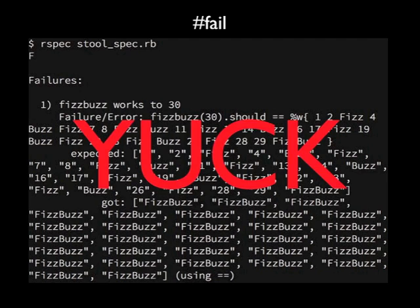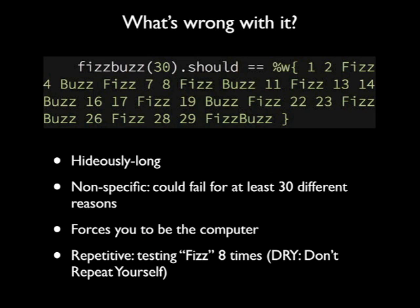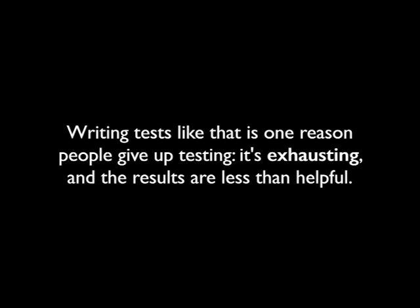But yuck. First off, it's hideously long, as is the error output. We're forced to visually match every single value in both arrays to find out what's wrong. There's also a bunch of repetition — we test whether the fizz logic works eight times. But it's a test. When it succeeds, we know the code's right, and that's perfectly valid. But we can do better, and we need to do better, because writing tests like that all day long is one of the reasons people give up testing. It's exhausting.